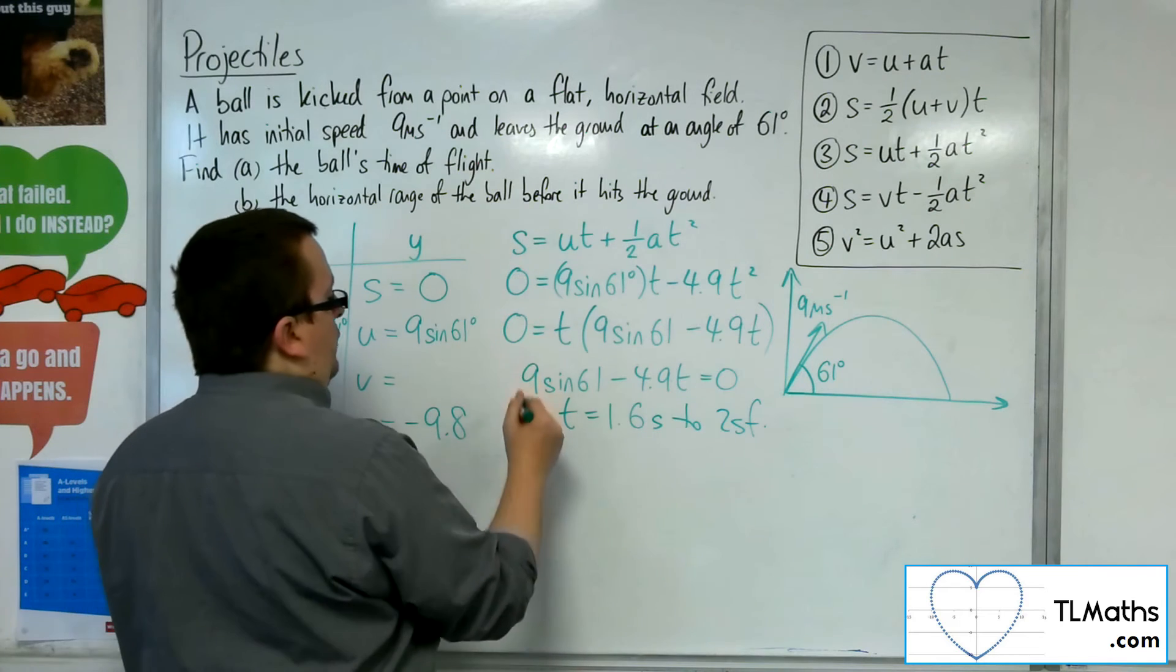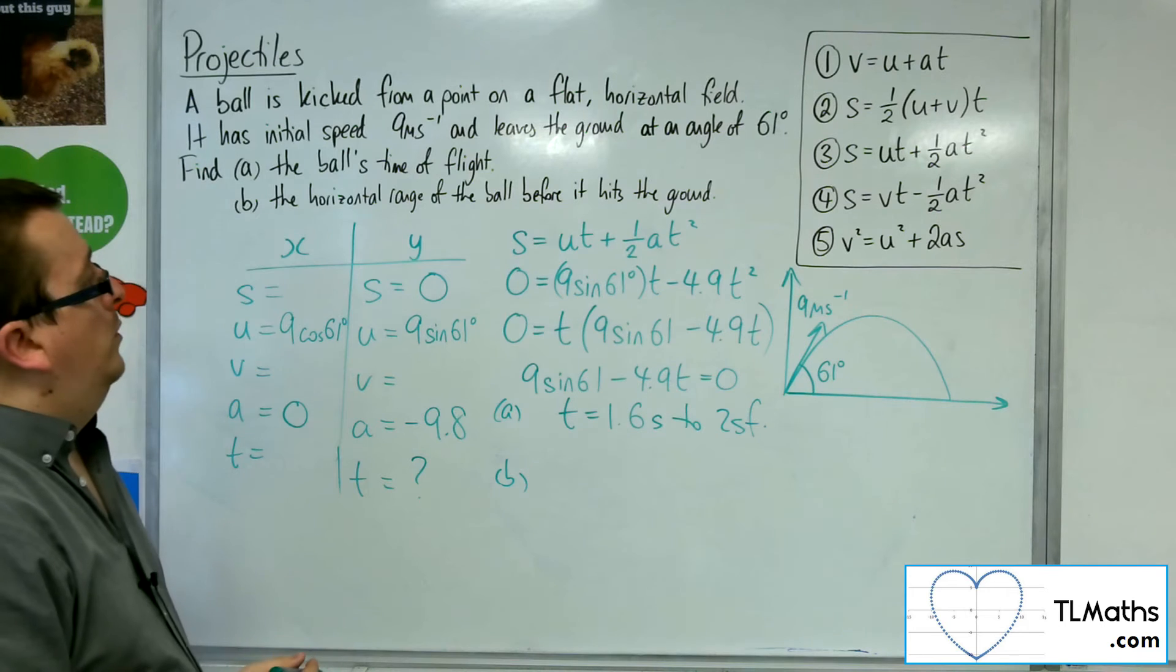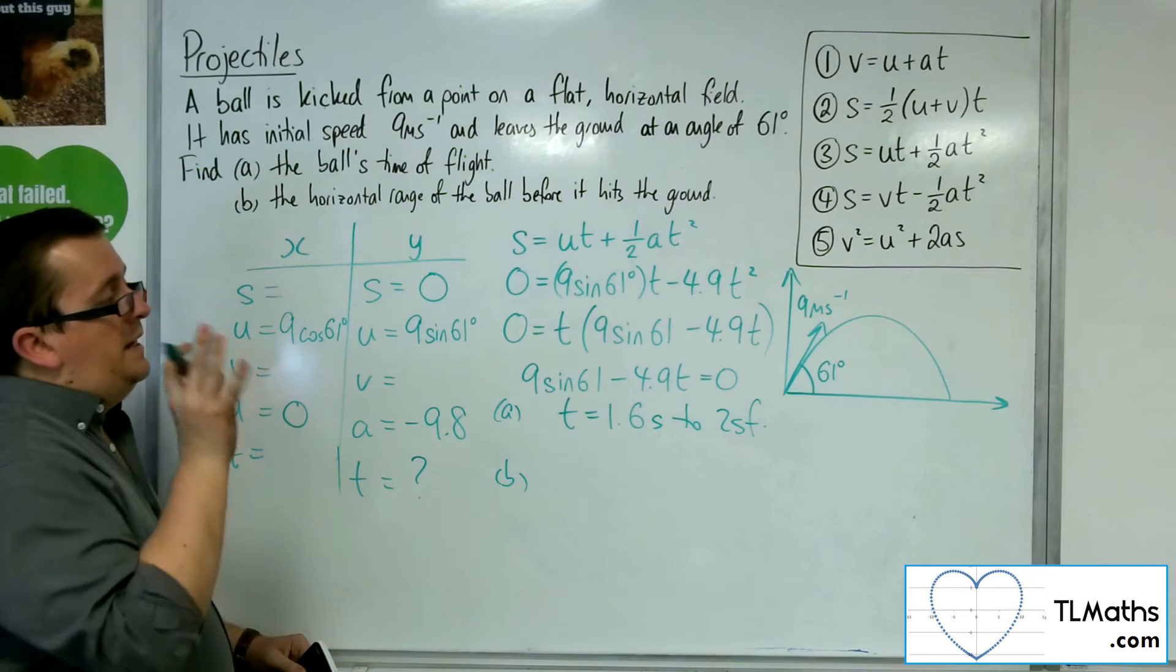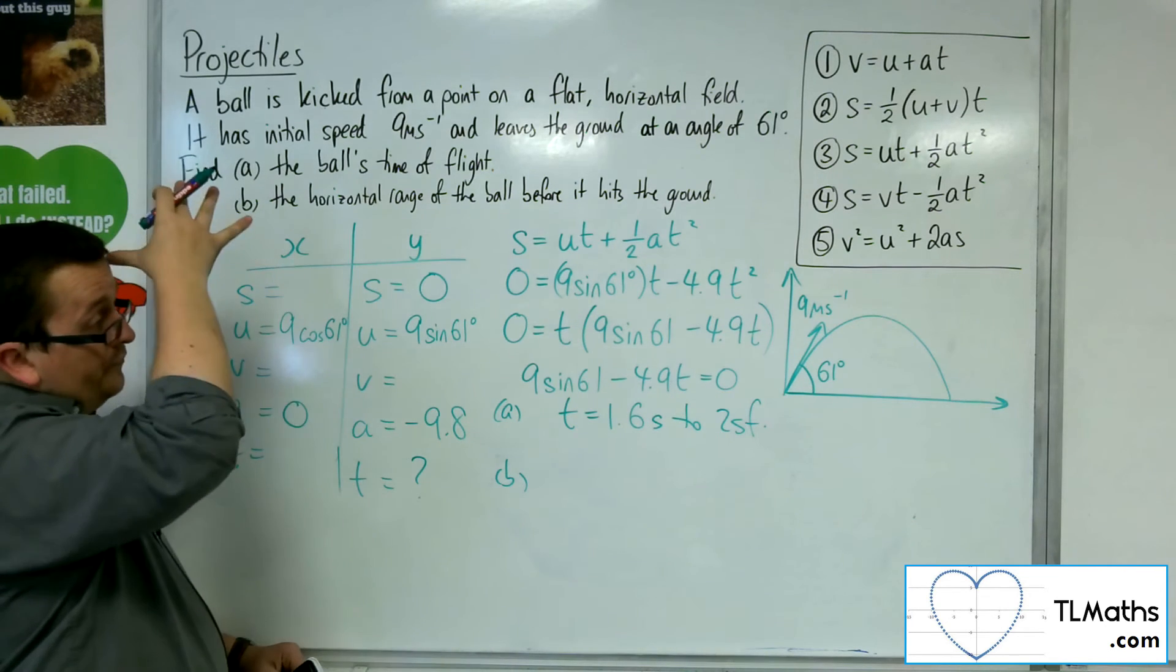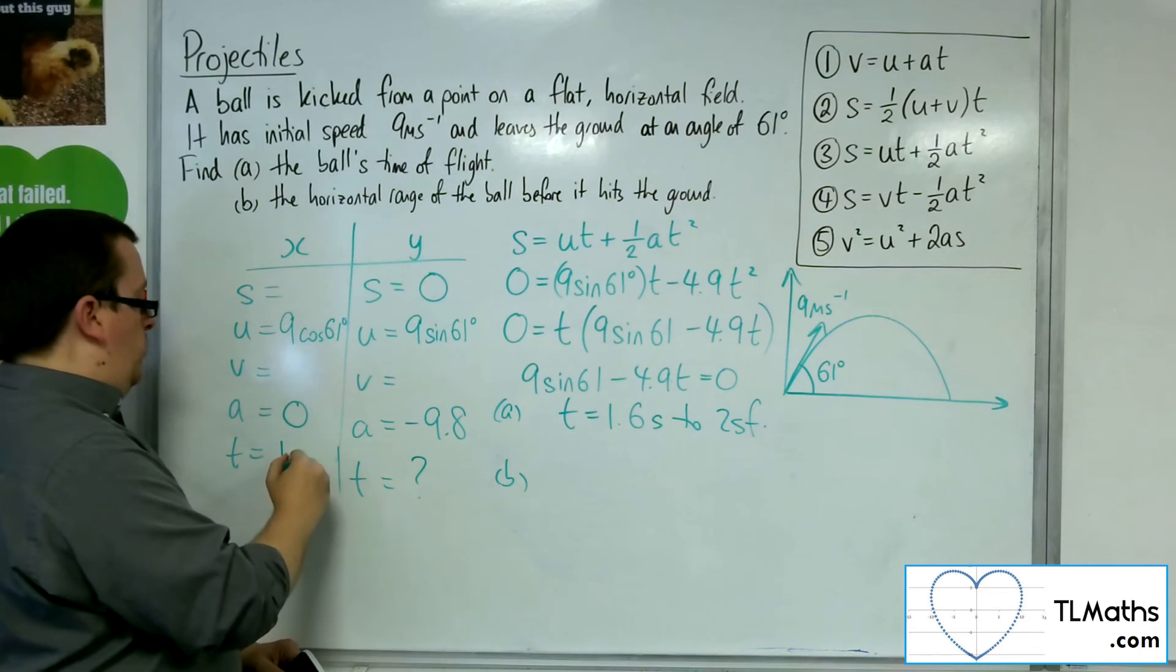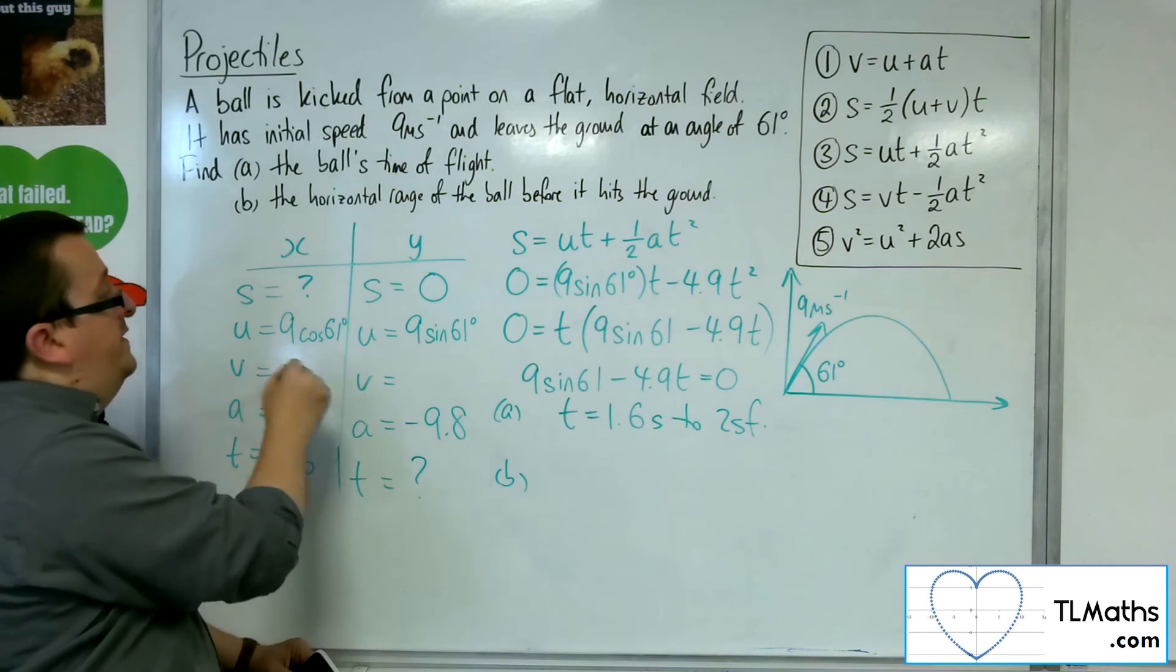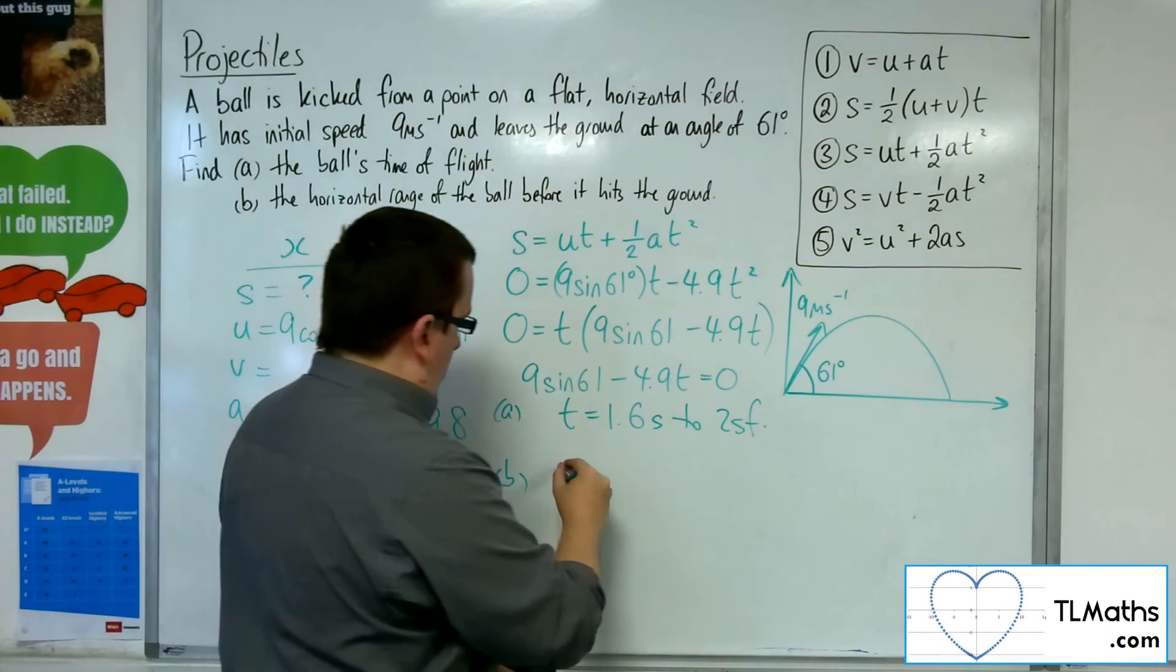So that's your part A. So part B, the horizontal range of the ball before it hits the ground. So how far has it gone in total? Now for this, I'm going to need the horizontal component for S. Now I know now that the time I'm looking at is 1.6. So I want to find the horizontal displacement. I don't want the one with V, and so I would use number 3 again.